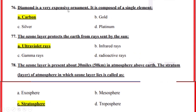Diamond is a very expensive ornament; it is composed of a single element — correct option A — carbon. The ozone layer protects the earth from rays sent by the sun — correct option A — ultraviolet rays. The ozone layer is present about 30 miles (50 km) above the earth. The stratum layer of atmosphere in which the ozone layer lies is called — correct option C — stratosphere.